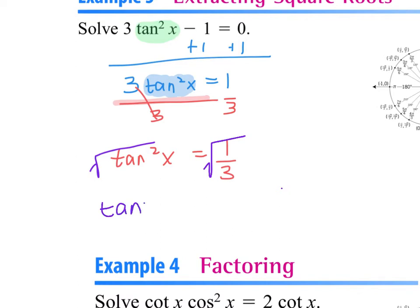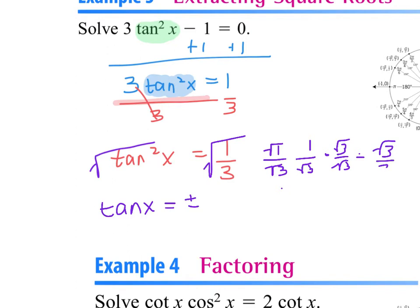I have tangent x equals plus or minus the square root of 1/3 — because when you put the square root on, you get ±. Can I leave 1 over root 3? No — I have to rationalize it. So I get root 3 over 3. I'm looking on the unit circle where all my tangent values are ±√3/3, which means I'm going to have 4 answers.